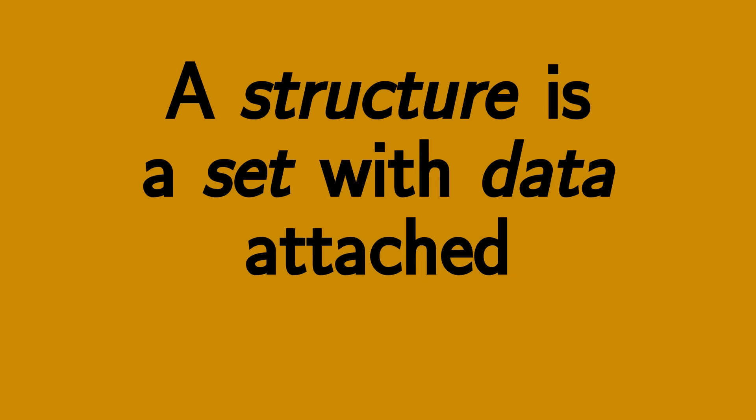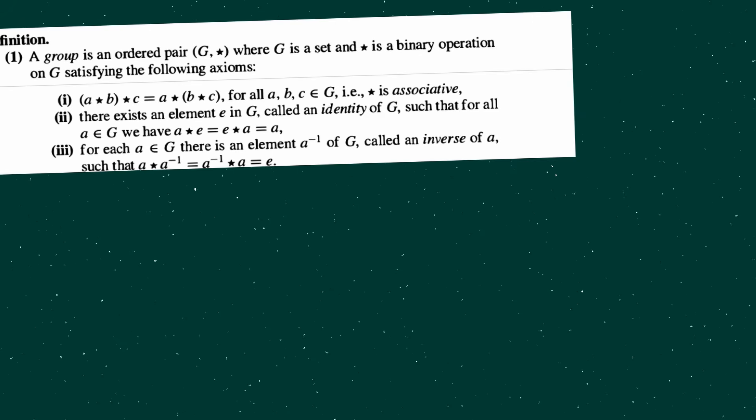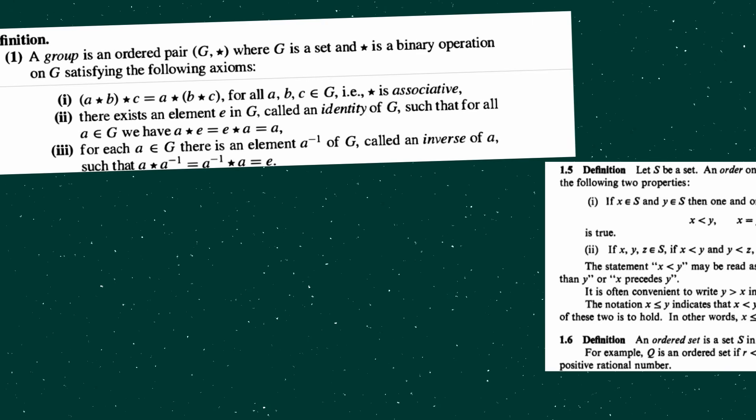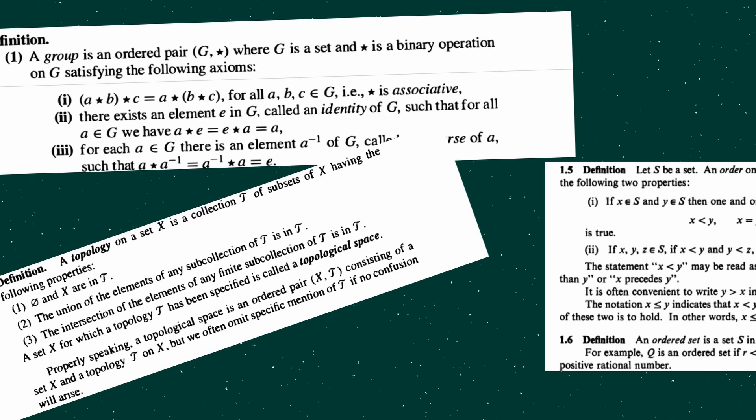A set of stuff, and then some data on that set. A group is a set, along with a binary operation on that set, satisfying certain laws. A pre-order is a set, along with a less than or equal to relation between the elements of the set, satisfying certain laws. A topological space is a set of points, along with a topology, encoding which points are in the same neighborhood, and which ones are separated from each other, and so on.